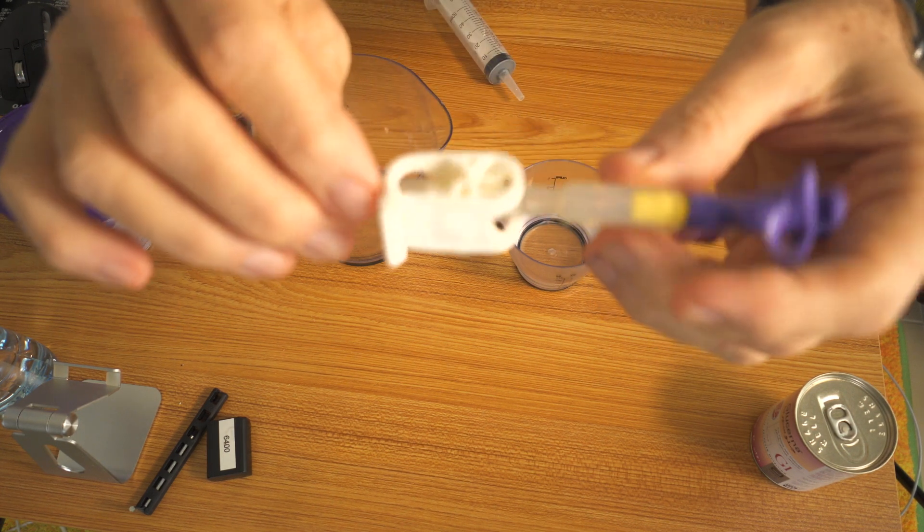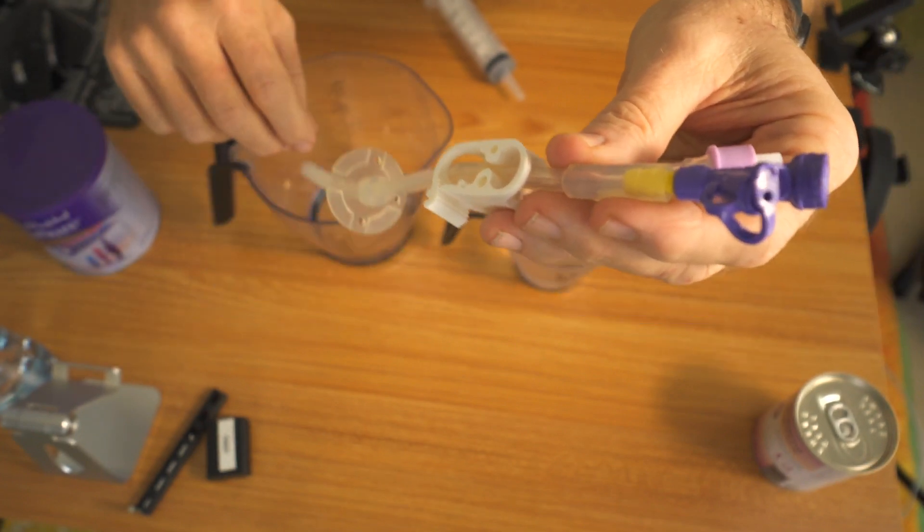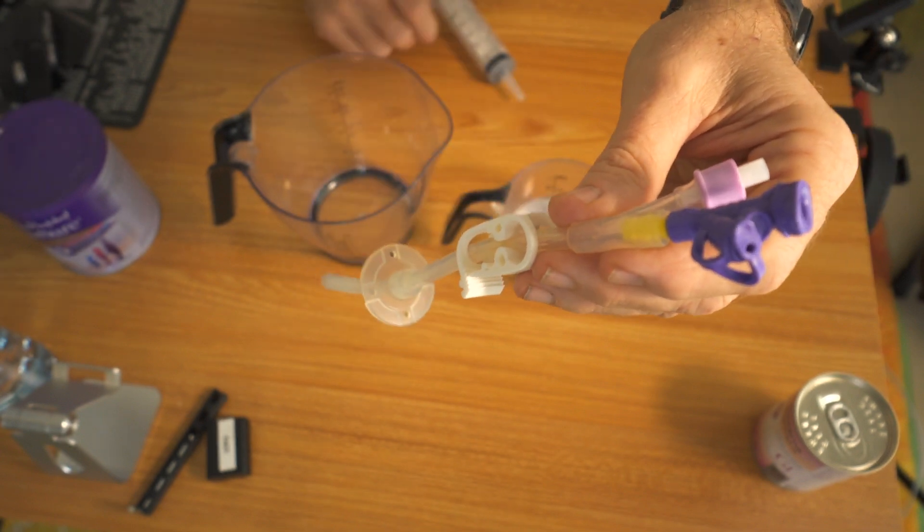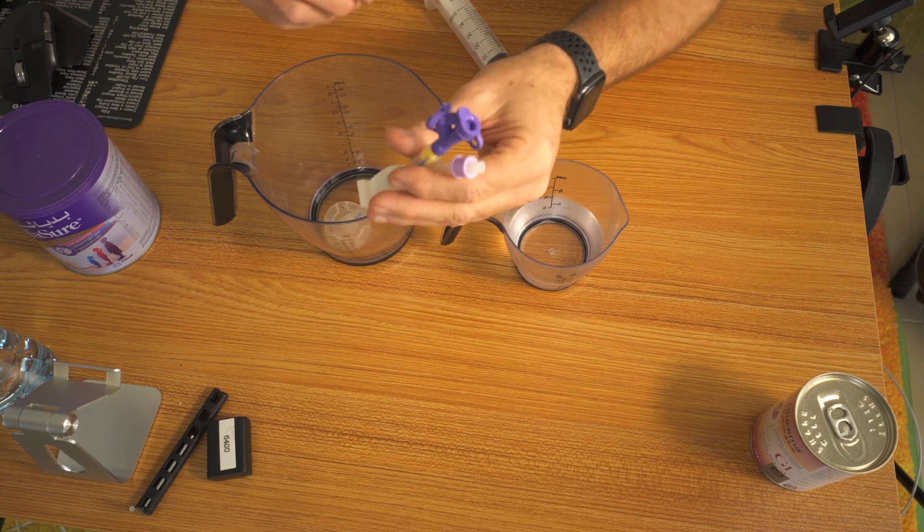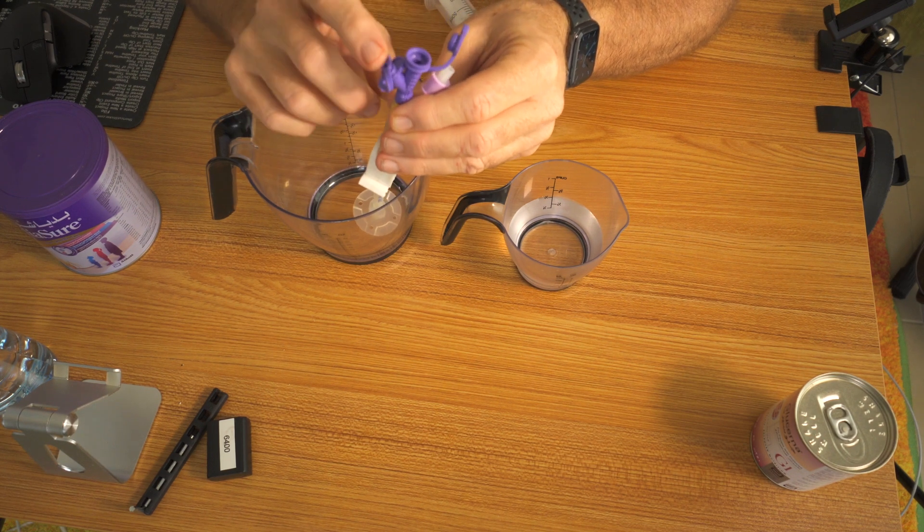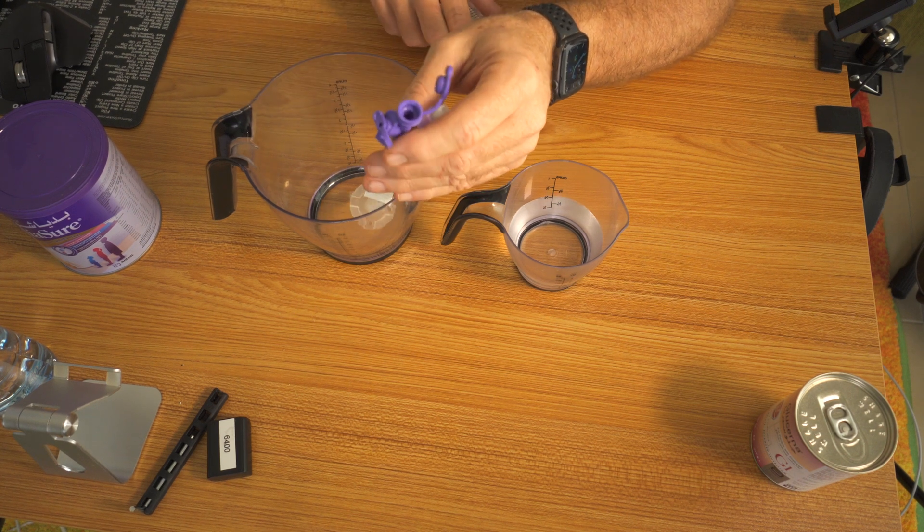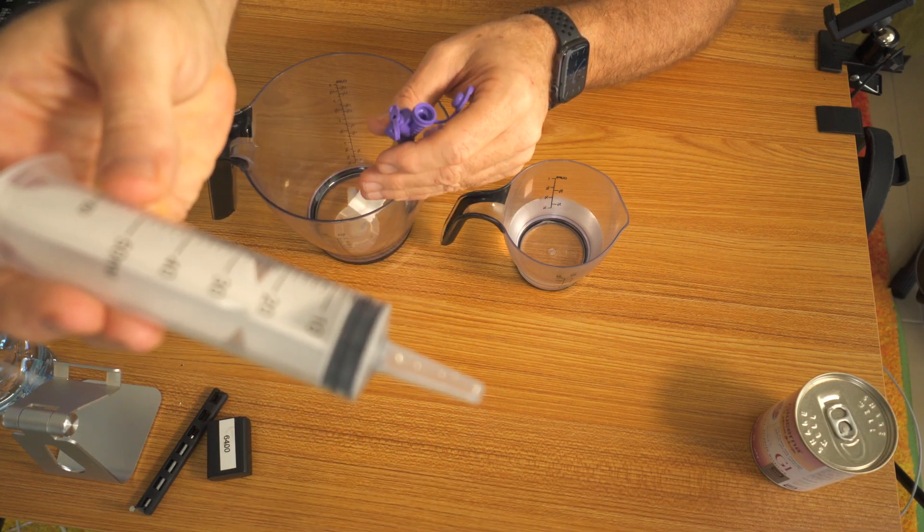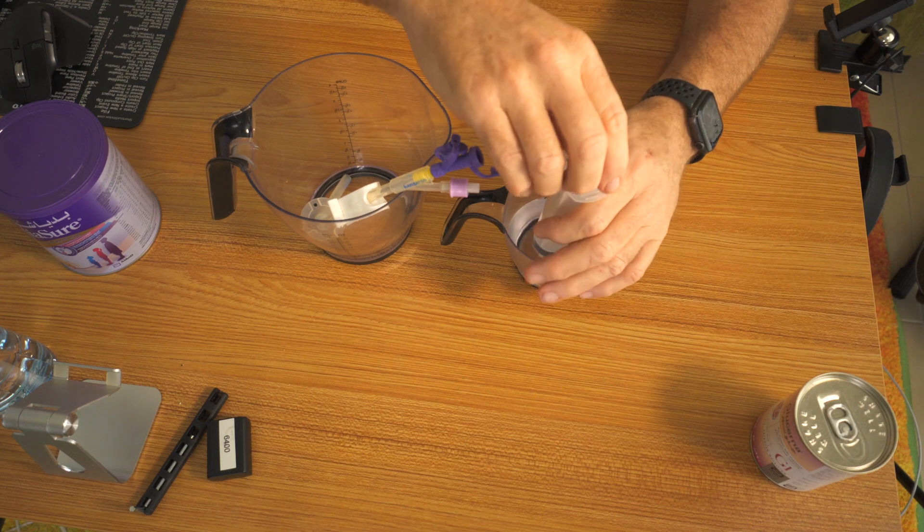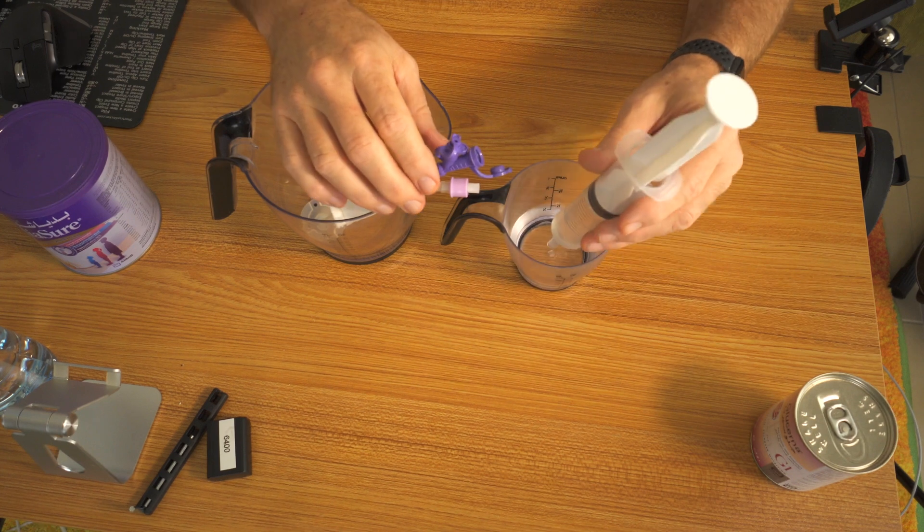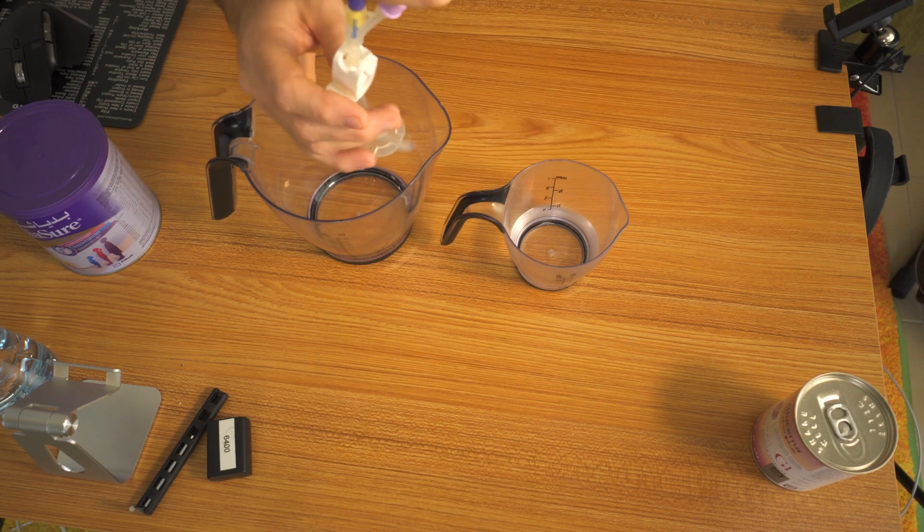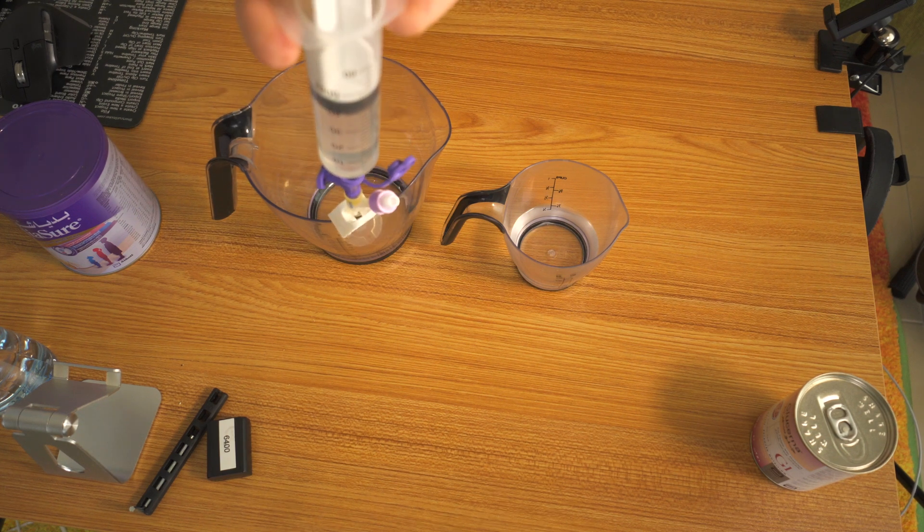Next thing we'll do is make sure the top is open. You'll notice on the PEG tube you have a feed port and a cleaning port, two different ports. Use the feed port. That's a little bit bigger and it's easier to get your syringe inside. First thing to do is take a little bit of water, pull it up inside, insert the syringe into the feeding tube like so, open the clamp like that, and then slowly slide it back.